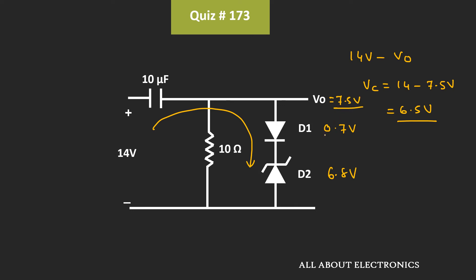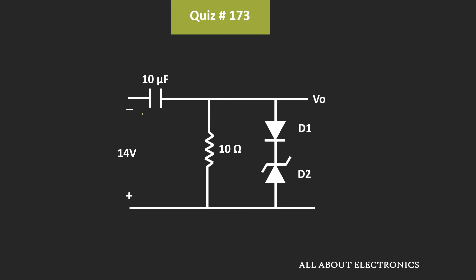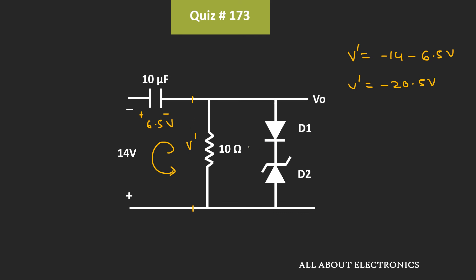Now let's see what happens during the negative half cycle. During the negative half cycle, the voltage across the capacitor will be equal to 6.5V. Let's say the voltage at this terminal is equal to V'. If we apply KVL in this loop, then we can say that V' is equal to minus 14V minus 6.5V, which means V' will be equal to minus 20.5V. This same voltage will also appear across these two diodes, so during the negative half cycle, these two diodes will remain OFF. The same voltage V' will also appear at the output terminal, meaning during the negative half cycle, the output voltage Vout is equal to minus 20.5V.